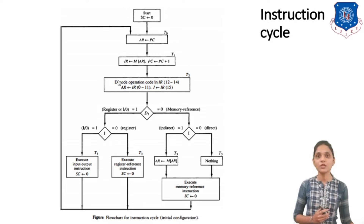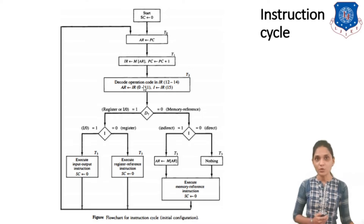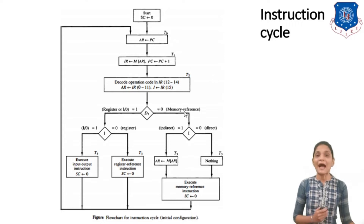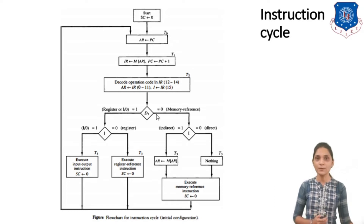After fetching, you will decode the instruction. For decoding you have to check bits 12 to 14 of the Instruction Register, which gives you the operation code from D0 to D7. Then you have to store this address into the AR register with the content of IR bits 0 to 11, and store bit 15 into the I flag. After fetching and decoding is completed, you find out which instruction it is and proceed accordingly.